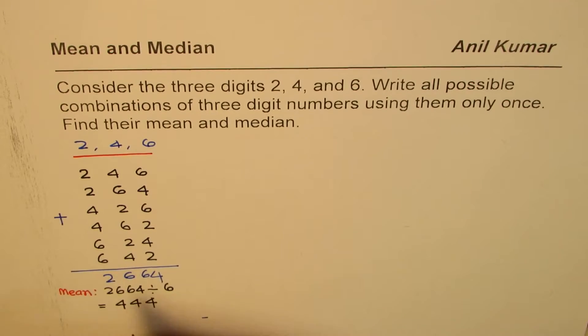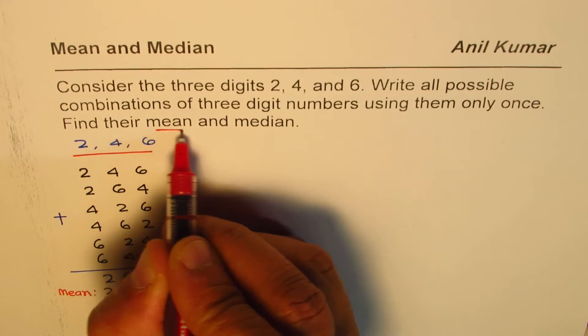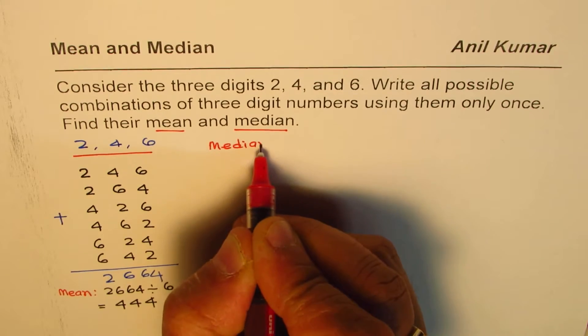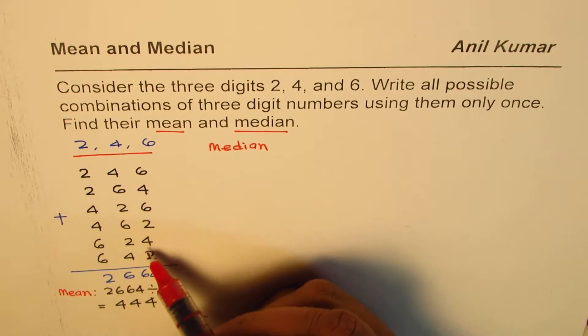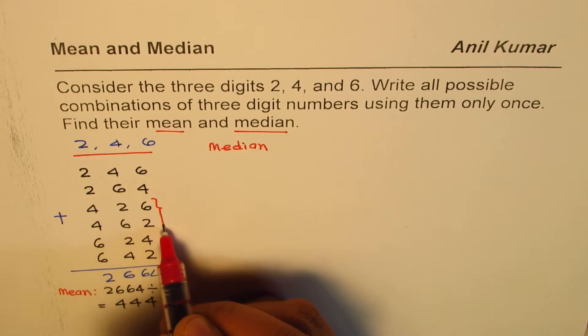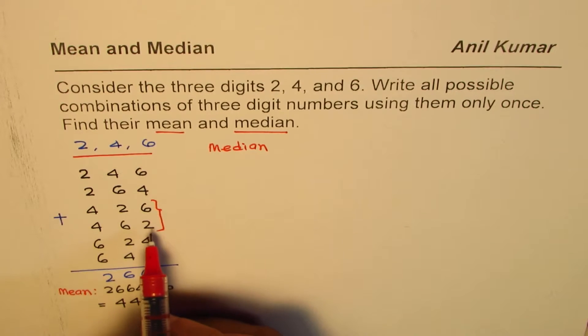Now, let us see how to find median. Since we have to find both mean, we already calculated. Now, let's see how to find median. Now, median is the center value. These numbers are arranged in ascending order. There are two numbers in the middle which are 426 and 462. Median is midway between them.